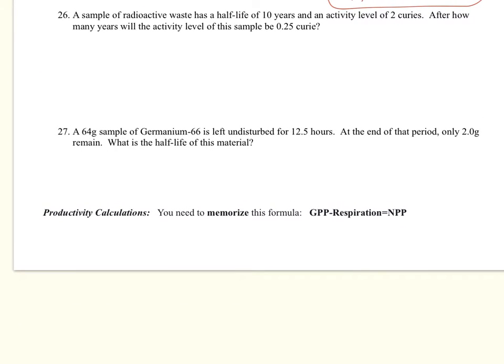Now we're going on to half-life. A sample of radioactive waste has a half-life of 10 years and an activity level of 2 curies. How many years will the activity level of the sample be 0.25 curie? Even if you don't know what curie means, you can still solve this problem. A curie is a measure of radiation. It's a radiation unit. It was actually named after Marie Curie, one of the female French scientists who discovered a lot of radioactive properties and elements.